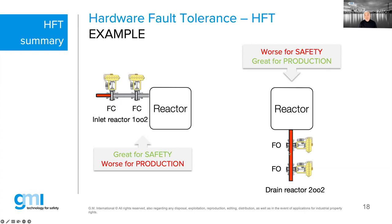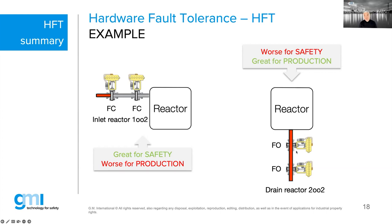On the right-hand side is the opposite: two fail-open valves in a drain function. A second valve is added because if the first leaks, you lose expensive product. However, since both valves need to be open, we have no safety redundancy — if one valve is stuck closed, you cannot drain. This is a 2oo2 configuration: great for production availability, but no dangerous fault tolerance.